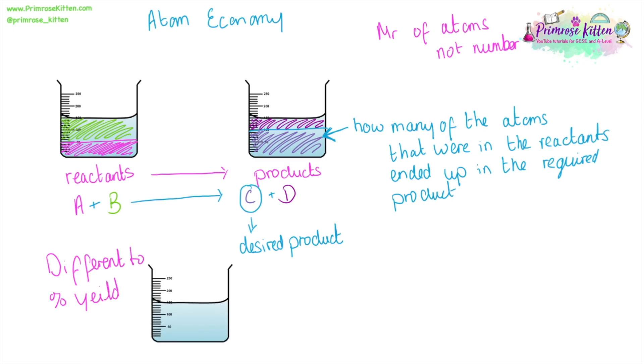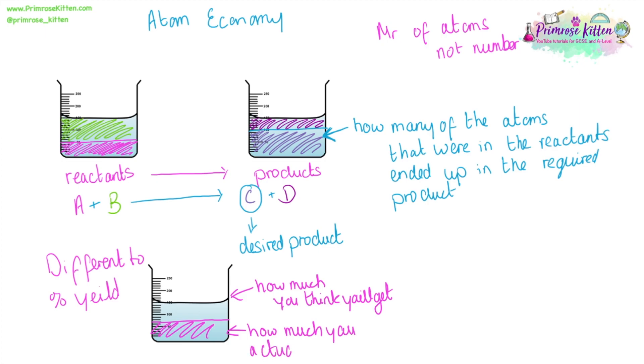You need to be aware of that. Percentage yield is how much you think you will actually get compared to how much you get at the end of a reaction. The equation is percentage yield equals actual yield divided by theoretical yield, so how much you actually get divided by how much you think you'll get times 100. And the reasons why you might not get 100% yield are different to the reasons you might not get 100% atom economy.